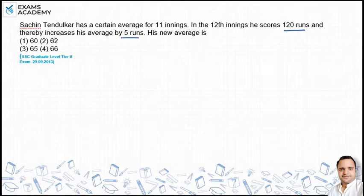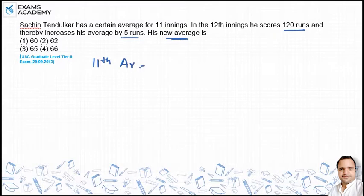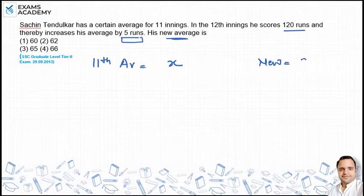In the 12th inning, he scores 120 runs. The average increases by 5. The average of 11 innings is X. Since the average is increasing by 5 in the 12th inning, the new average will be X plus 5.